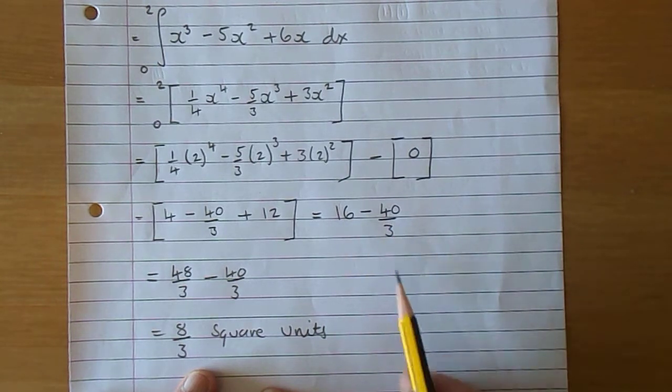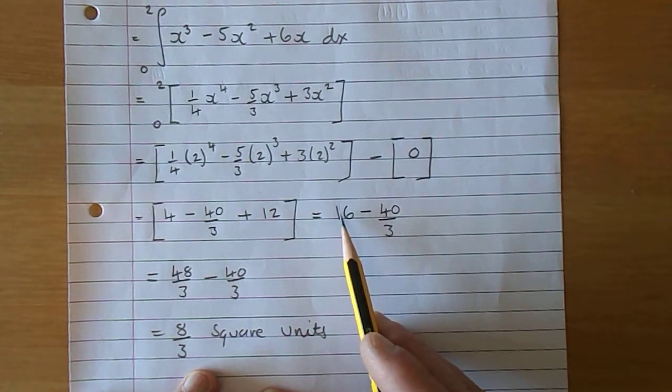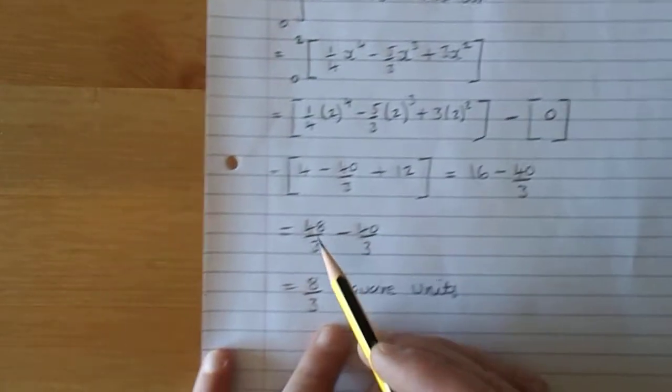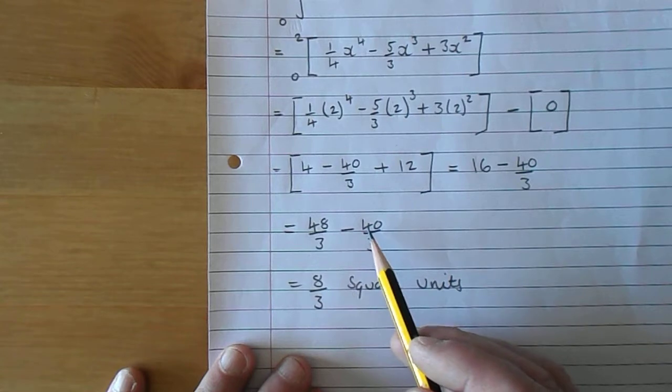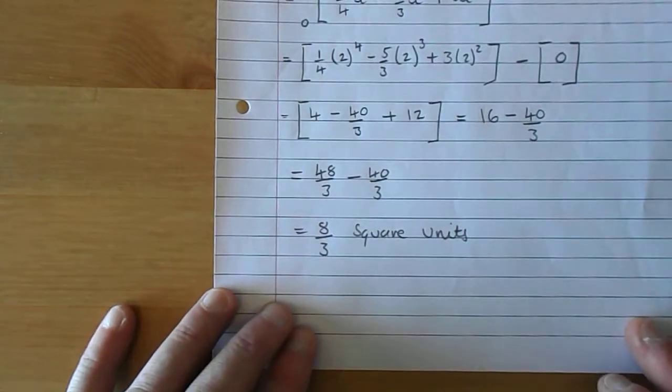Let's change the 16 into so many thirds. 3 16s are 48, so 16 is 48 thirds. Take 40 over 3, take 40 over 3, which is 8 over 3 square units, 8 thirds.